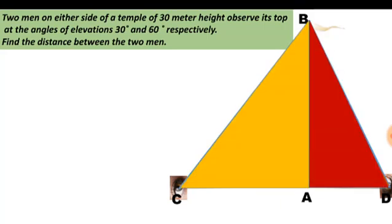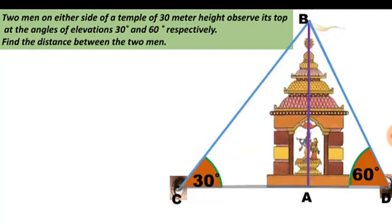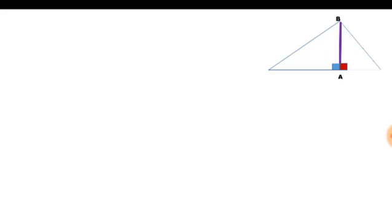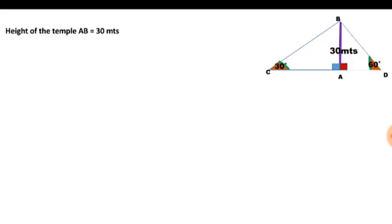Using these two right triangles we can find the distance between the two persons. AB is the height of the temple, C is the position of the first observer, and D is the position of the second observer. C observes the top at angle of elevation 30 degrees and D at 60 degrees. The height of the temple is 30 meters. Given: height AB equals 30 meters.